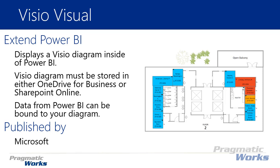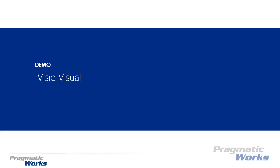The first step is you need to create a Visio diagram. When you're creating that diagram you need to make it where you can actually bind data to it. Once you've created that diagram you need to store it in one of two places: either OneDrive for Business or SharePoint Online. The custom visual will prompt you to provide a link from one of those two places. This custom visual has been developed by Microsoft. We're going to start by creating a diagram and then walk you through how to use the visual and bind your own data to it.